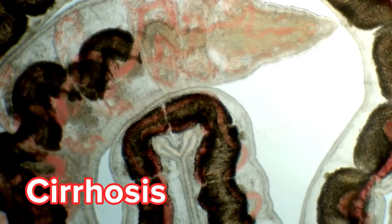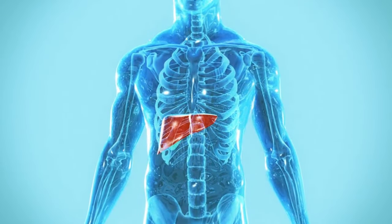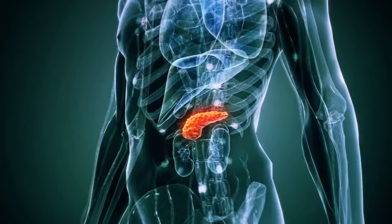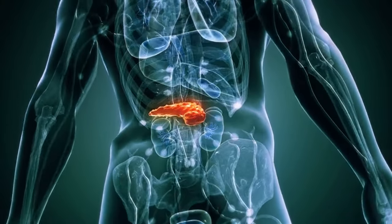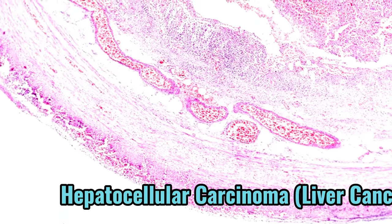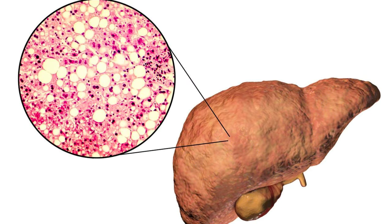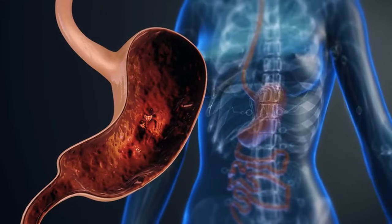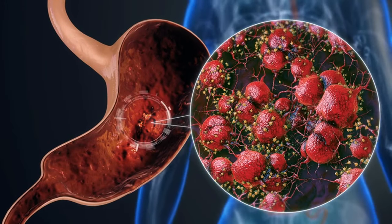Cirrhosis looms large in advanced NAFLD. In this stage, the liver undergoes extensive scarring, compromising its ability to function effectively. Complications include jaundice, ascites, hepatic encephalopathy, and an increased risk of liver cancer. Hepatocellular carcinoma — a type of liver cancer — emerges as a dreaded complication of advanced NAFLD. As liver cells undergo malignant transformation, the risk of cancerous growths within the liver escalates, posing a grave threat to overall health and survival.